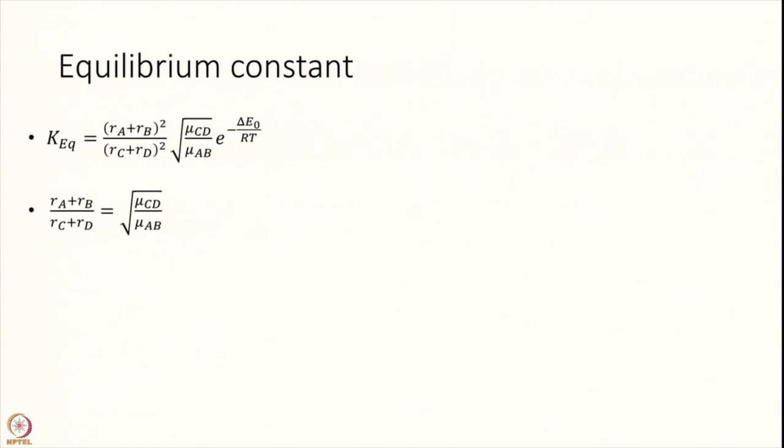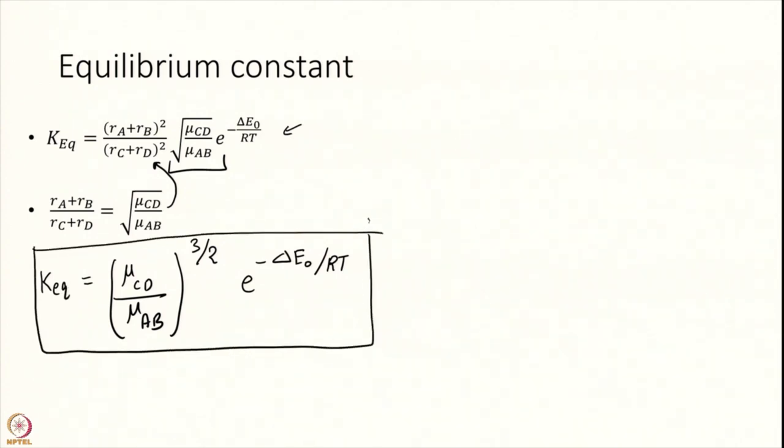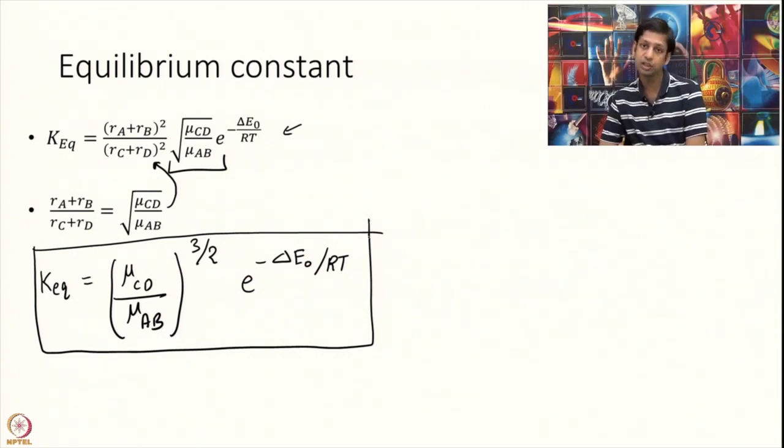Earlier I had derived K equilibrium to be this big equation (R_A + R_B)^2 all this thing just a few slides ago and now we have found the relation between the radii. So I am going to substitute this equation here. This will become equal to mu_CD over mu_AB and you notice I have a square root of mu_CD over mu_AB here. So this becomes to the power of 3/2. So according to collision theory your equilibrium constant is given by this, it is actually independent of the radii. If you tell me the masses, if you tell me the reactants and you tell me the products and you tell me the difference between the potential energy between the reactants and products, I can calculate you the equilibrium constant. Rather simple proof but very very powerful.